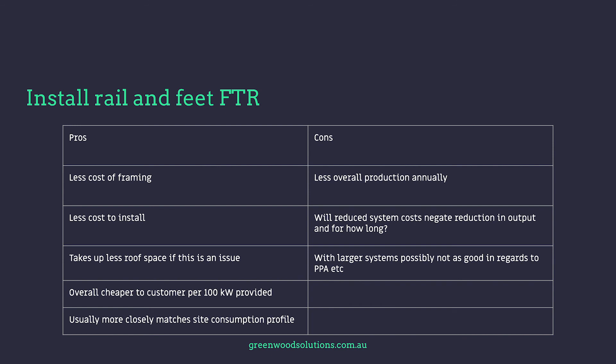For flat to the roof: pros include less cost of framing, less cost to install, takes up less roof space if that is an issue, and is overall cheaper to the customer per 100 kW. It also usually more closely matches the site consumption profile. Cons include less overall production annually, savings from lower install cost may be negated by reduced output over time, and with larger systems it may not perform as well under a PPA — power purchase agreement.